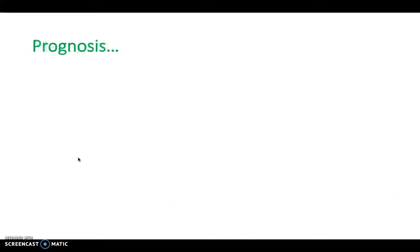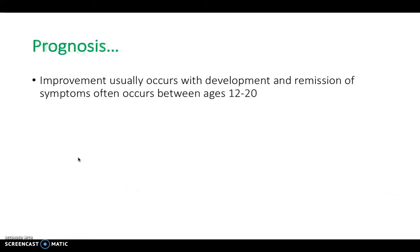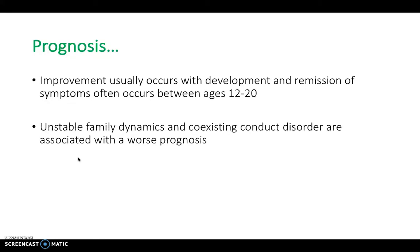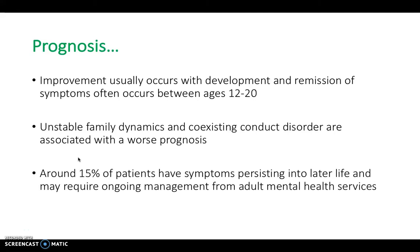Prognosis: improvement usually occurs with development, and remission of symptoms often happens between ages 12 and 20. Unstable family dynamics and co-existing conduct disorder are associated with a worse prognosis. Around 15% of children have symptoms that persist into later life and need to be transferred to the adult mental health team for ongoing management.